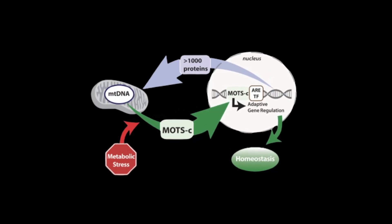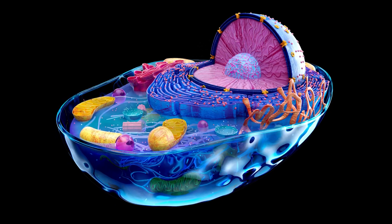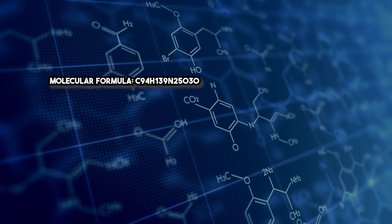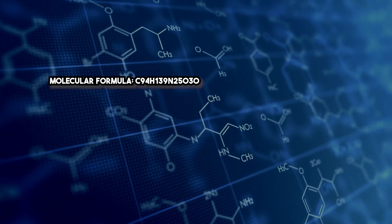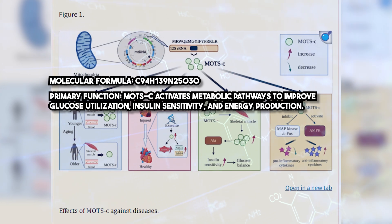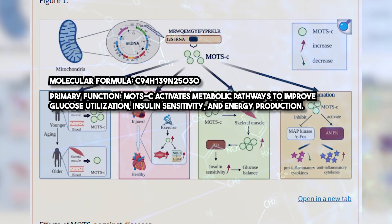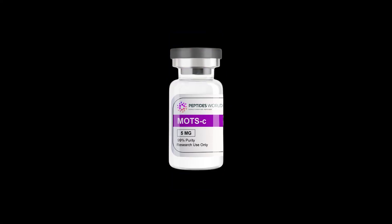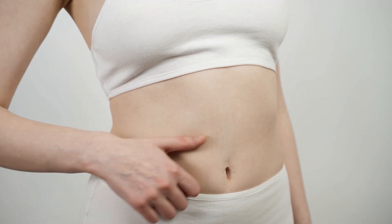MOTSC is a 16-amino acid peptide encoded by mitochondrial DNA. Unlike traditional peptides, which originate in the cell nucleus, MOTSC is synthesized in mitochondria and plays a critical role in regulating metabolism and cellular stress responses. Molecular formula: C94H139N25O30. MOTSC activates metabolic pathways to improve glucose utilization, insulin sensitivity, and energy production. This unique peptide has profound implications for metabolic health and longevity.